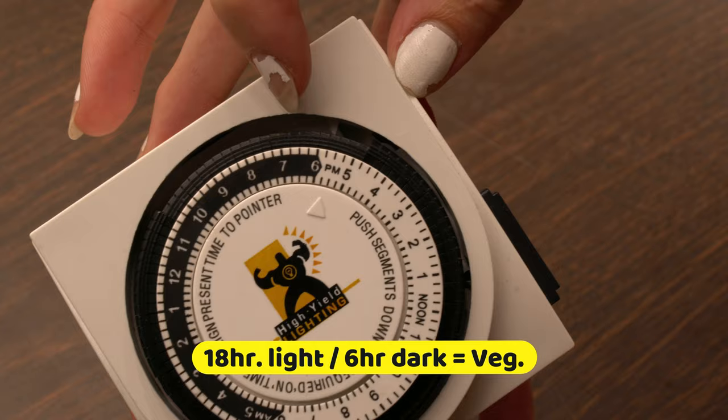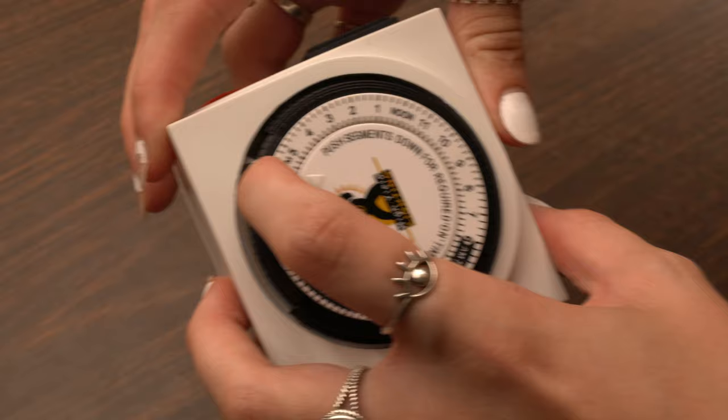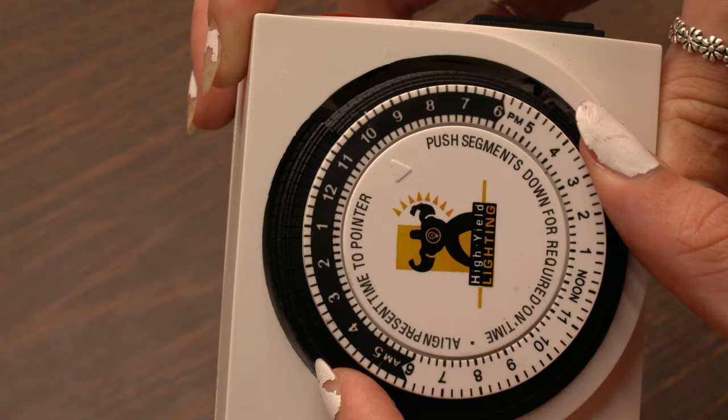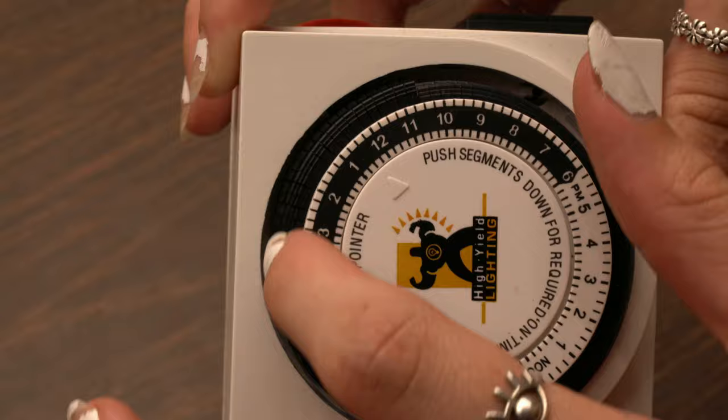As you can see here, the switch can tell where the time of day is based on the timer. So it would go around and see that it's nighttime, well nighttime for the plants, lights off, and then turn back on and click once it gets back to the turned on section of the light.